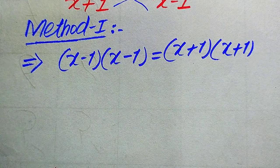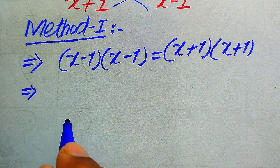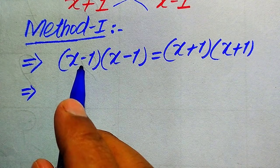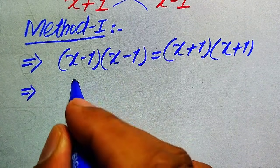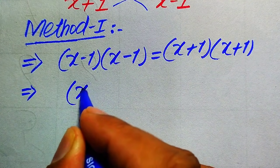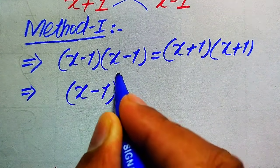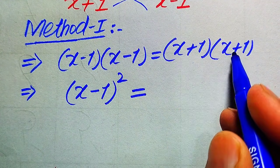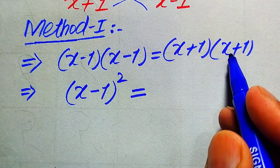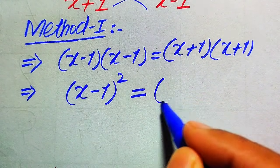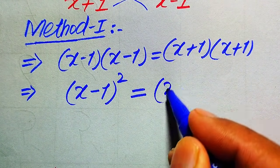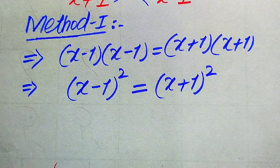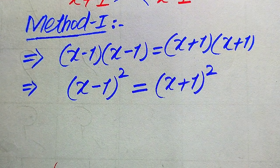When we multiply any two same numbers, it comes into square form. So (x - 1)(x - 1) is written as (x - 1)², and (x + 1)(x + 1) is written as (x + 1)².